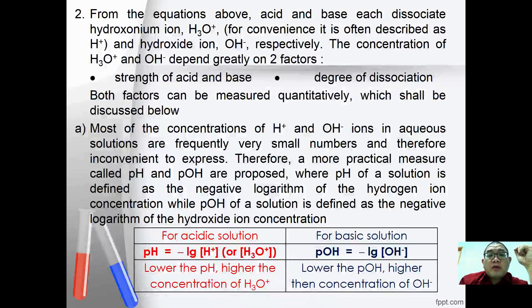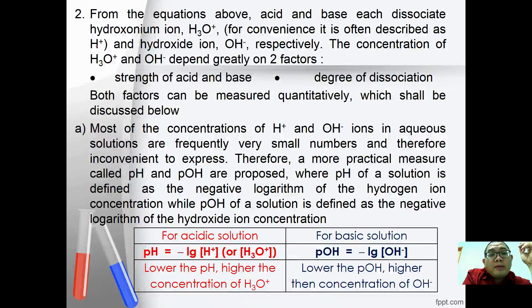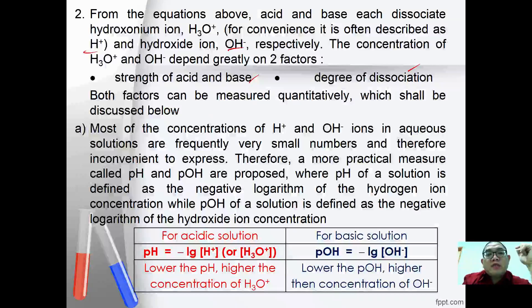From the equations above, acids and bases each dissociate to form hydronium ion H⁺ and hydroxide ion OH⁻ respectively. The concentration of H₃O⁺ and OH⁻ depends greatly on two factors: one is the strength of the acid or base, and two is the degree of dissociation. Both factors can be measured quantitatively, which will be discussed below.